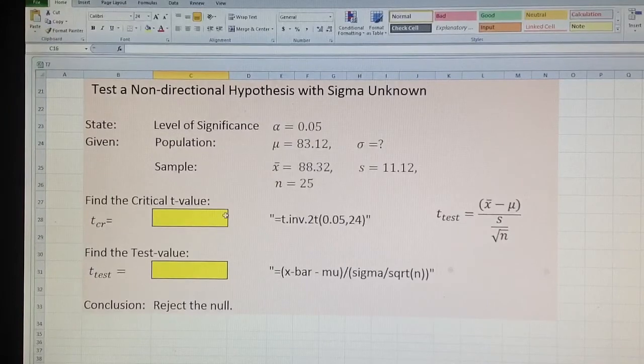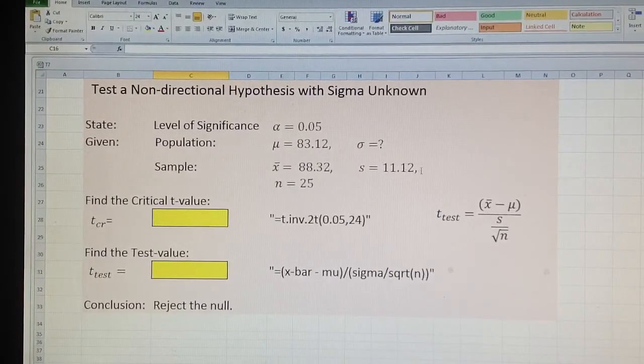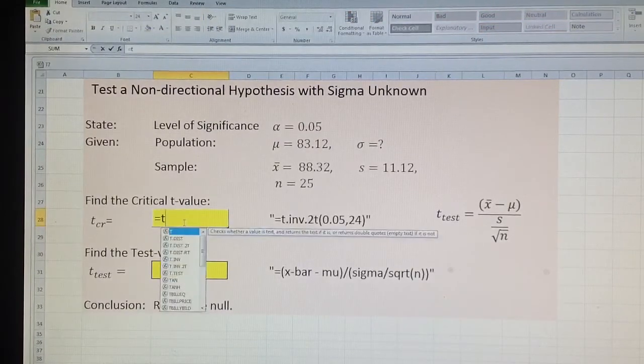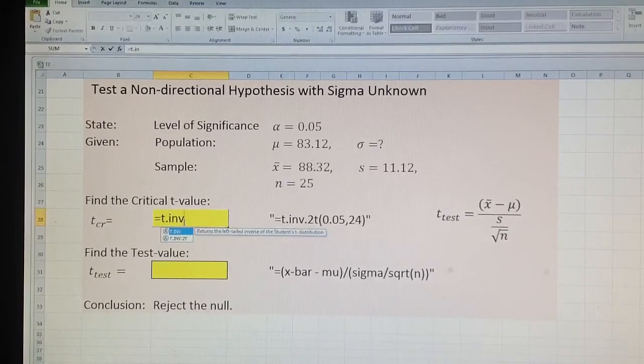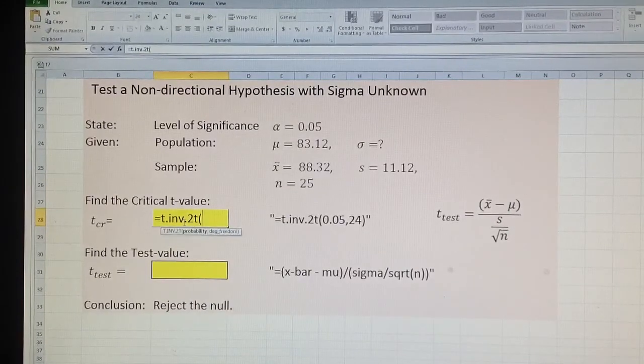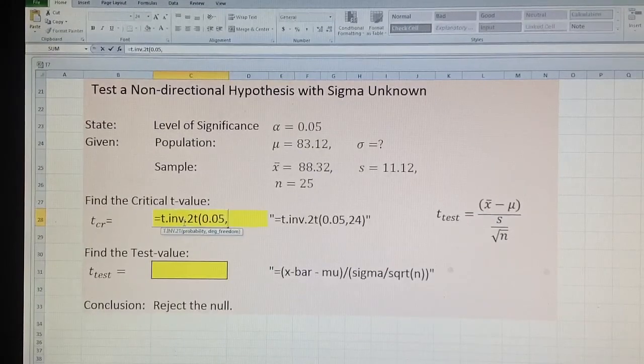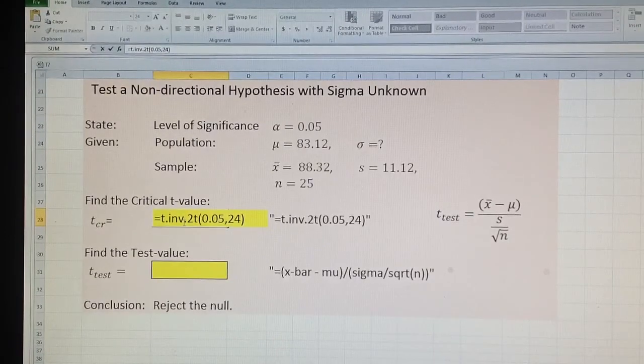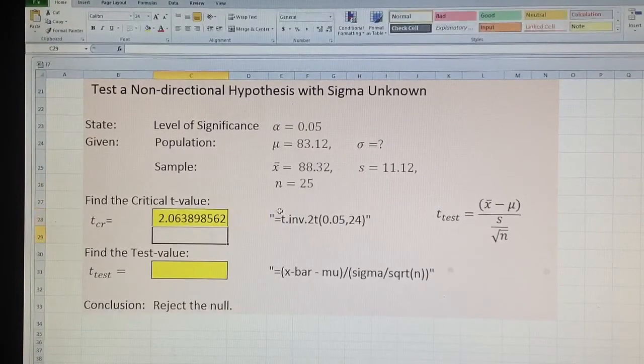The same if I don't know sigma. Don't know sigma, but I have S of the random sample. So critical T value is—formula is T inverse dot 2T, which means 2 tail, 0.05. I put the whole alpha level. And 24 is degree of freedom because I have a smaller sample of 25. 25 minus 1 is 24.